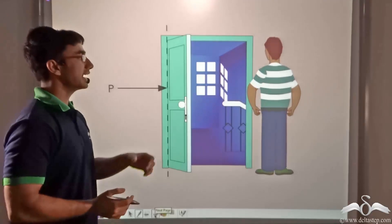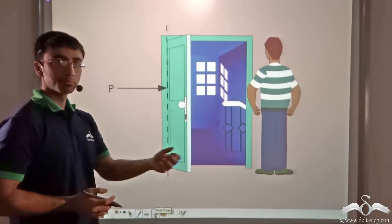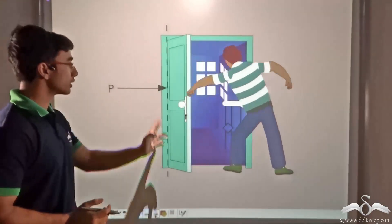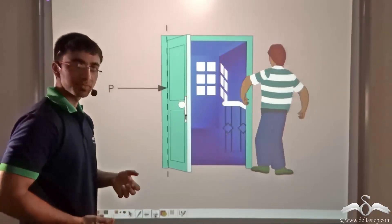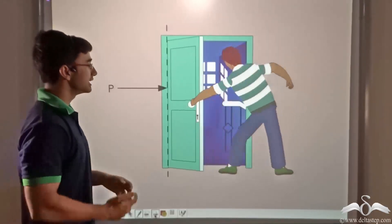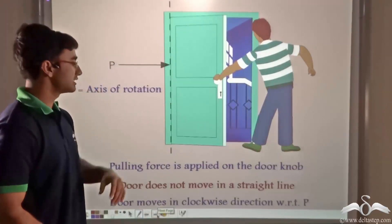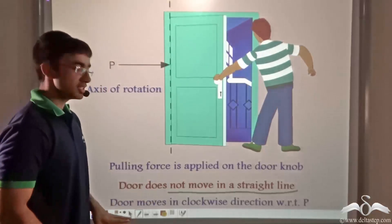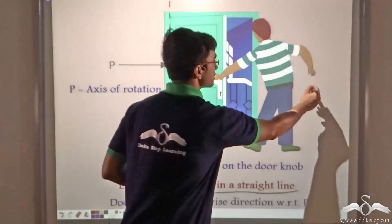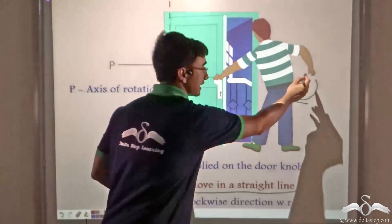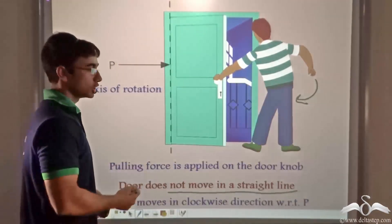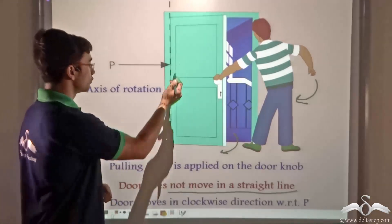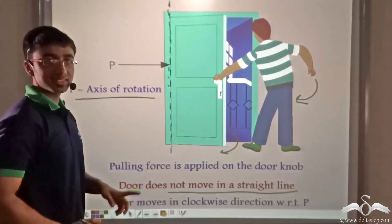Look at this animation closely. A man is pulling the knob of a door and pulling it open. If you look closely, you will find that this door is moving about a particular line. This line is known as the axis. When the man is pulling the door, the door is not moving in a straight line — instead it is rotating about this axis. The door is moving in a clockwise direction with respect to point P, which is the axis of rotation.